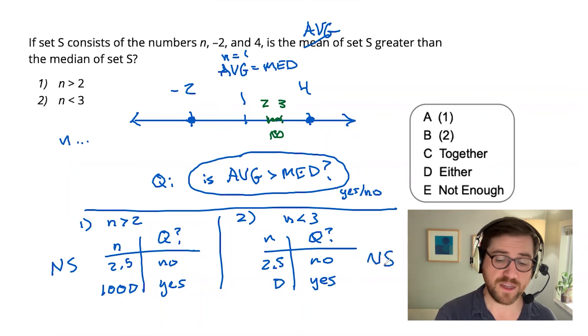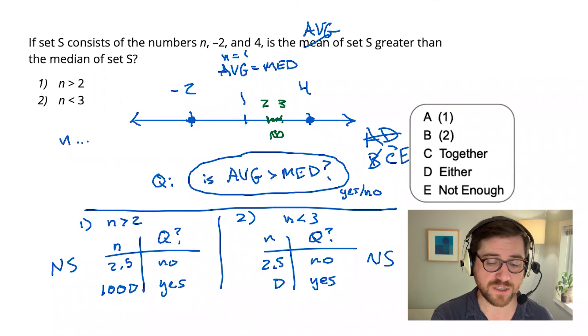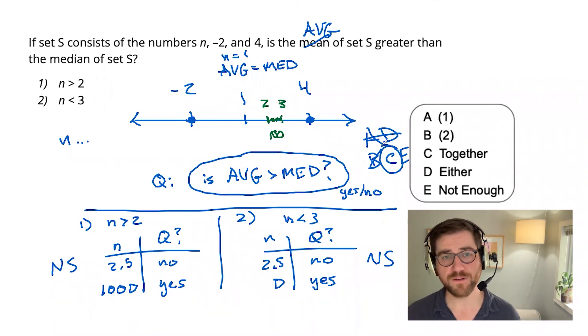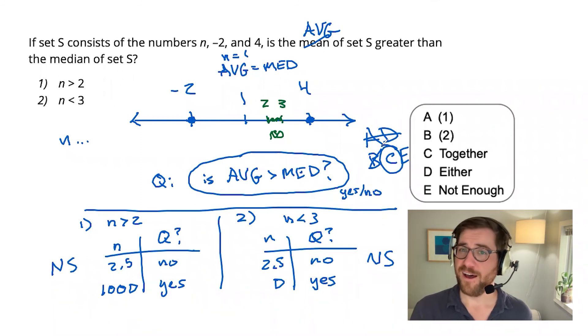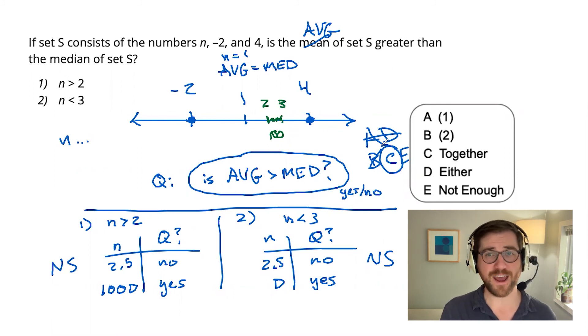We are down in our data sufficiency grid at this point to C and E. So it's time to put them together. And the work is already done for us. Together, we're right in that green territory. We know that's going to be a no to this question. So sufficient. All right. A little more than we maybe bargained for when we first glanced at it, right? And that can happen for sure.